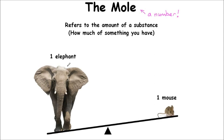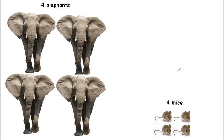For example, here I've got one elephant and on the right I've got one mouse. These two things have different masses — the elephant is heavier than the mouse — but we've still only got one of each. It's how many of something you have. So here we have one elephant and one mouse; they have different masses but it's the same number of moles of them. Similarly, here we've got four elephants and four mice — the same number of things — but their masses are going to be different, not because of the moles but because of the size of the actual things.